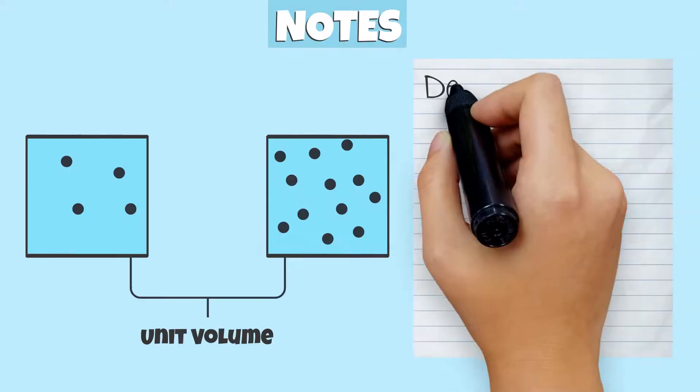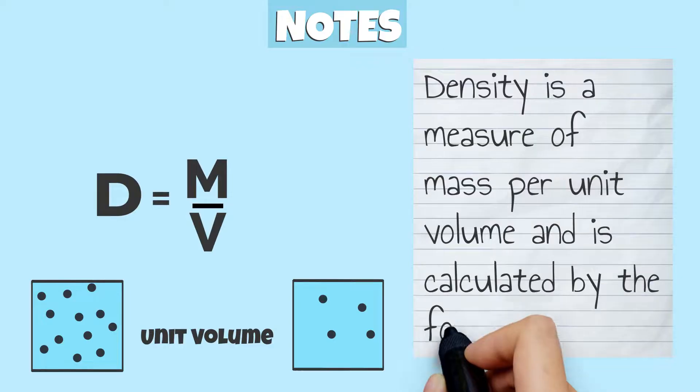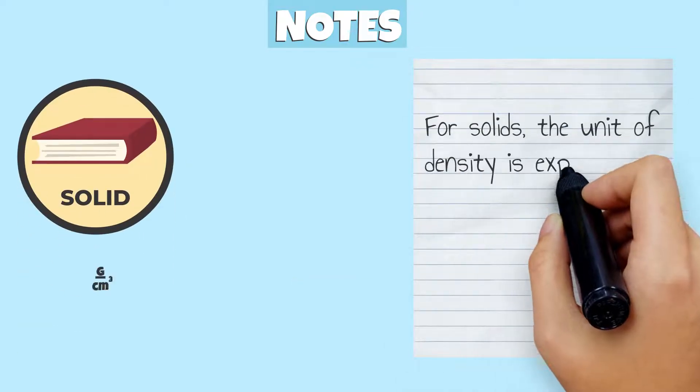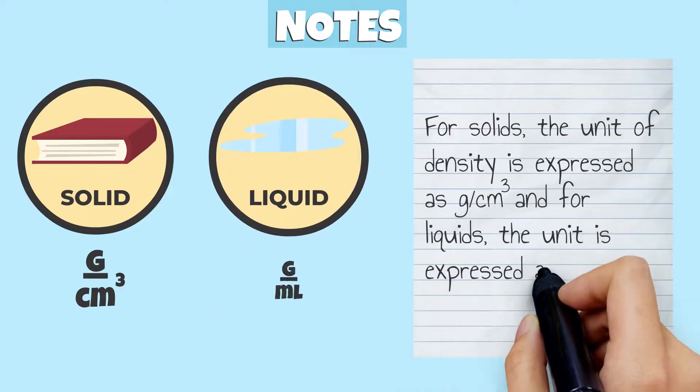That's it! We just learned density is a measure of mass per unit volume and is calculated by the formula d equals m over v. For solids, the unit of density is expressed as grams over centimeters cubed and for liquids, the unit is expressed as grams over milliliters.